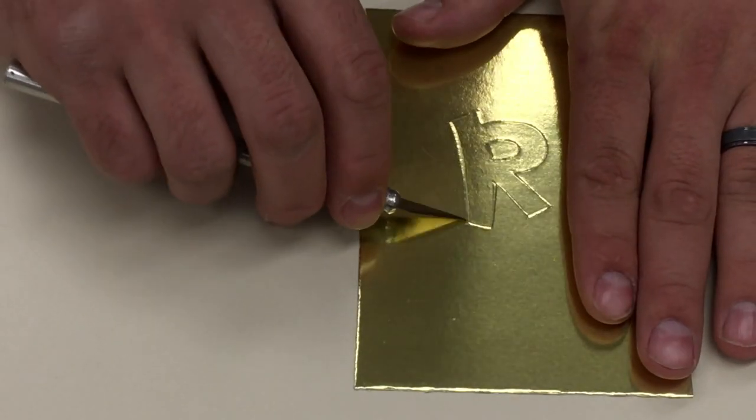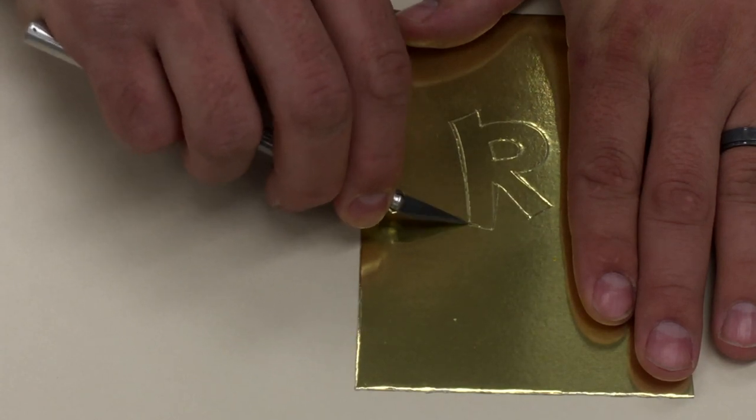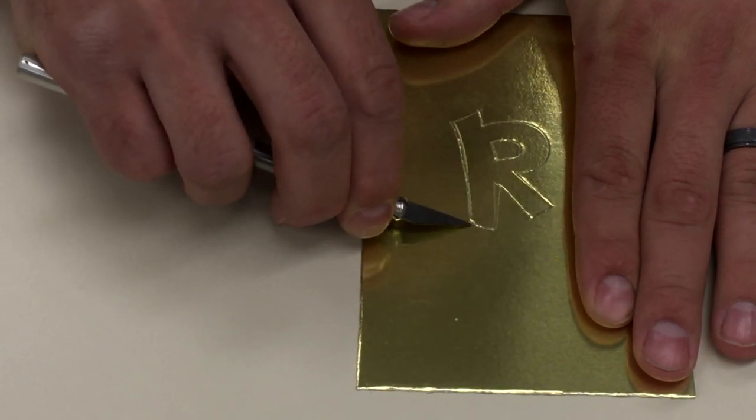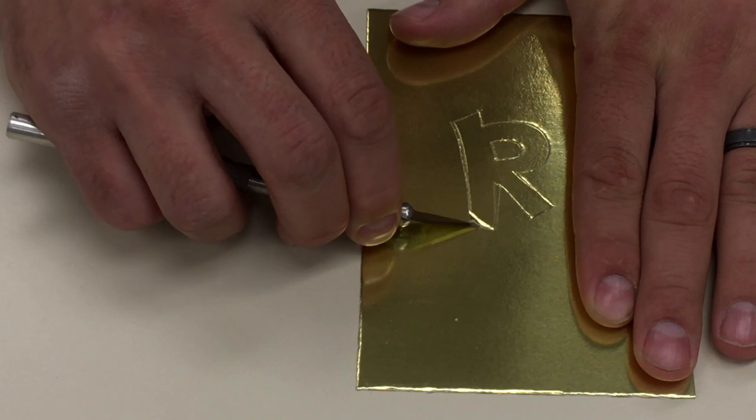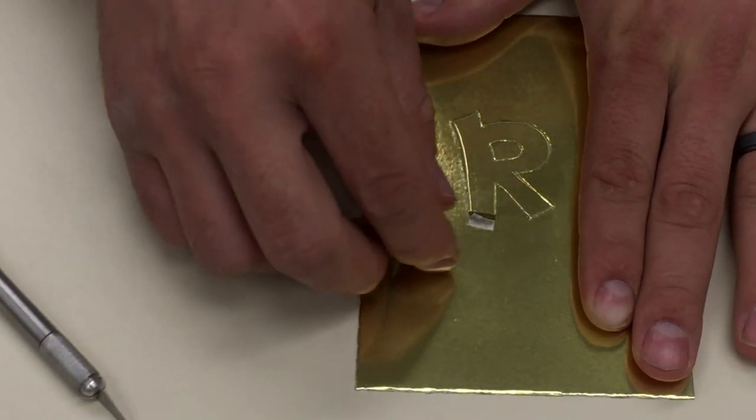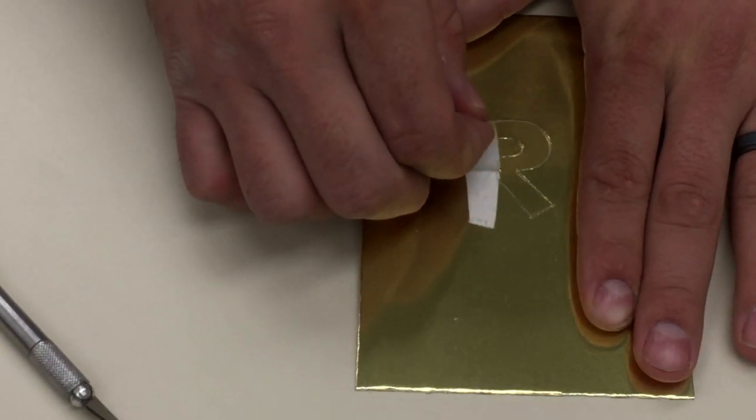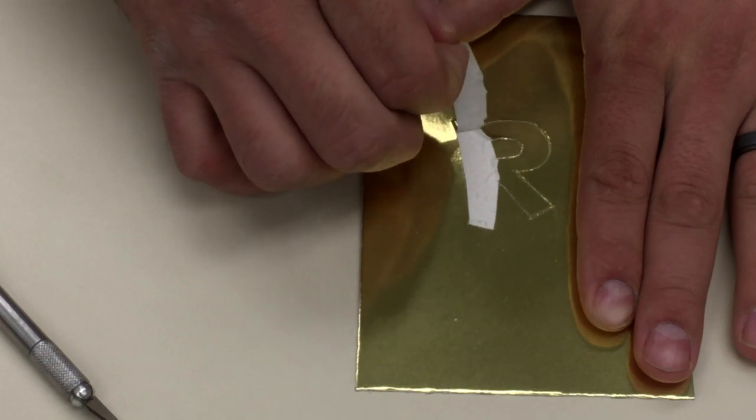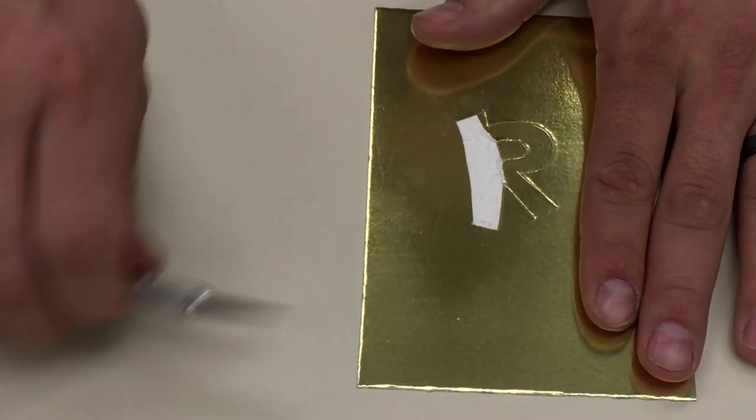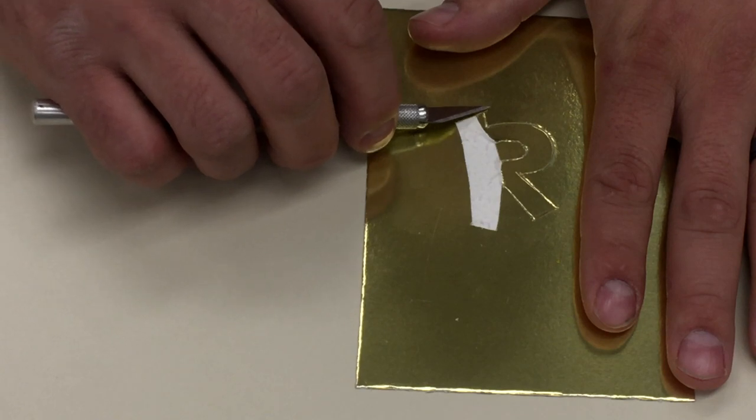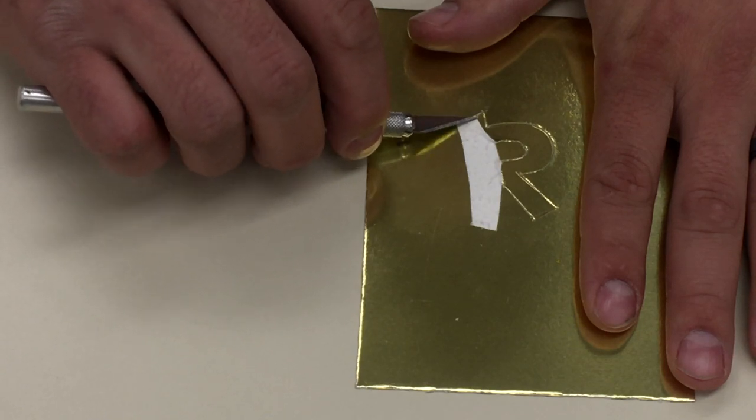Then, using the tip of the blade, I'm going to slightly try and get underneath one of these corners. Once I get under that corner piece, I can peel it up. And it should end by the edges if I went deep enough.